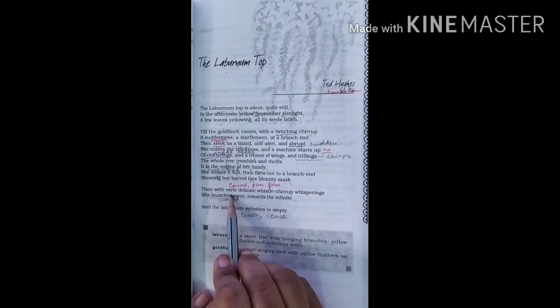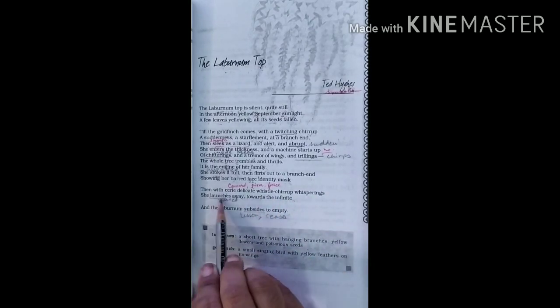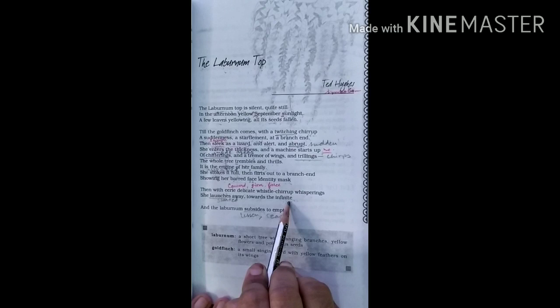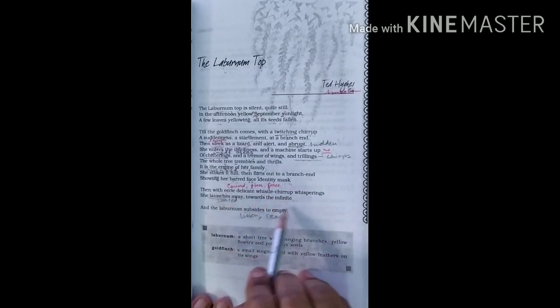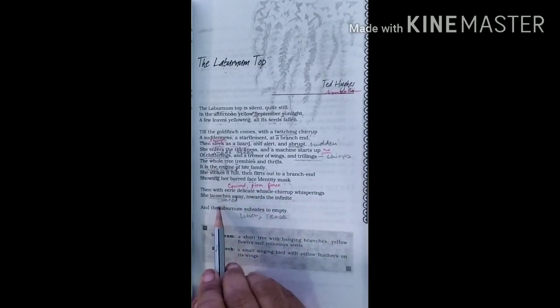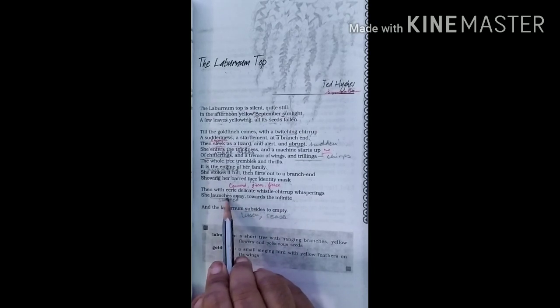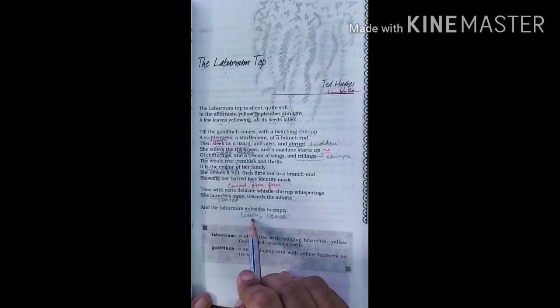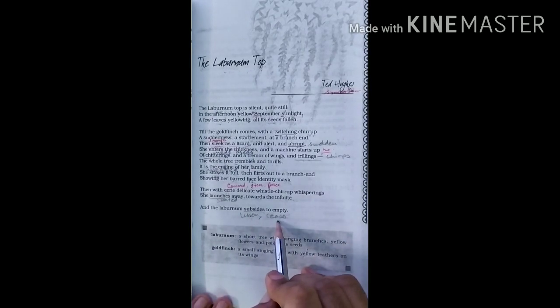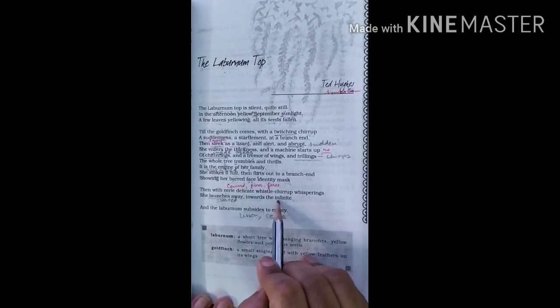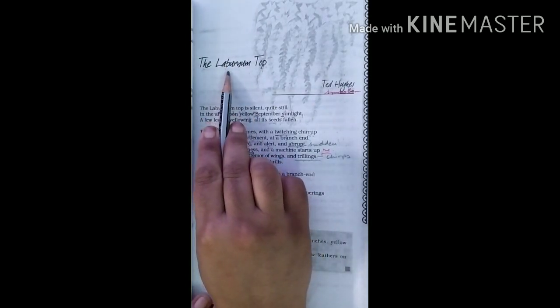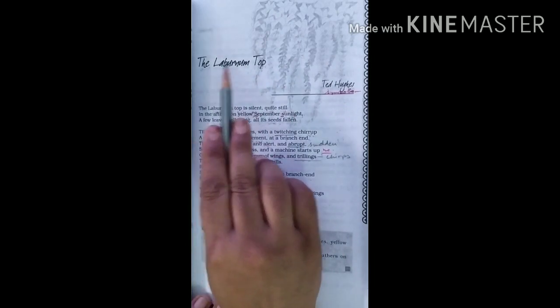According to the poet, it fills them with fuel. She stokes it full. Stokes means add fuel to the engine. So it fills them with fuel. It gives food to the young ones and thrills to the tree. Having done this, she again flies through a branch and only her dark colored striped face, her barred face, her barred face means her dark colored striped face is visible as it is yellow and hence becomes invisible in the yellow leaves of the tree. Then with eerie, delicate, whistle, chirrup whisperings, she launches away towards the infinite and the Laburnum subsides to empty. Word meanings we have already discussed. Eerie means strange, queer, and launches means started. Subsides means lessen, returns, cease. Reaching the branch end of the tree, it makes strange but sweet chirrup sounds and then begins its journey towards the infinite. Infinite here refers for the sky. And the Laburnum tree again becomes silent and dead-like.